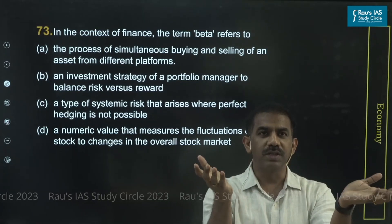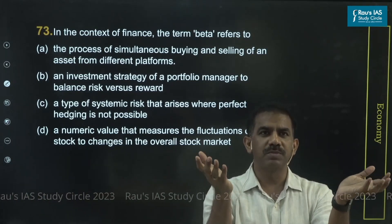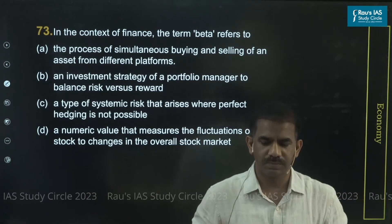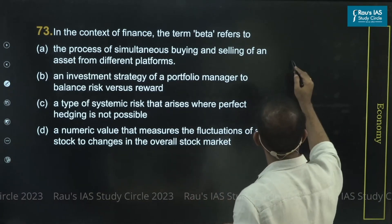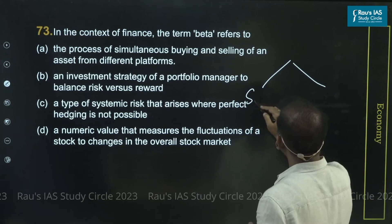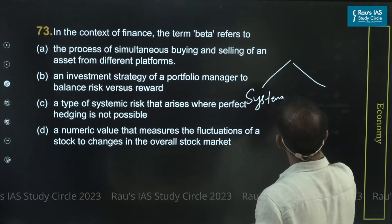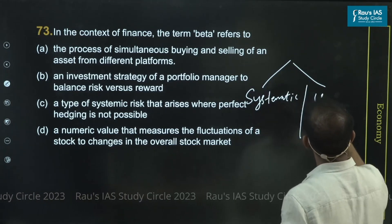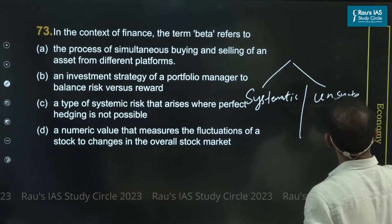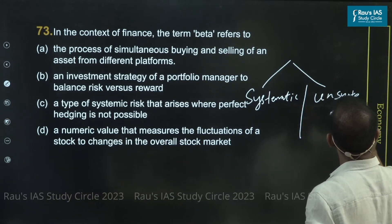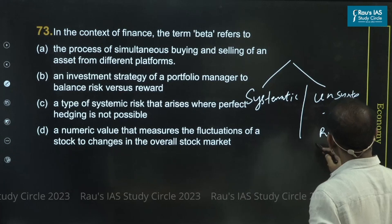Because there is always a risk associated when you invest money in the market. This risk is broadly classified into two different types: one is systematic risk and the other is unsystematic risk.